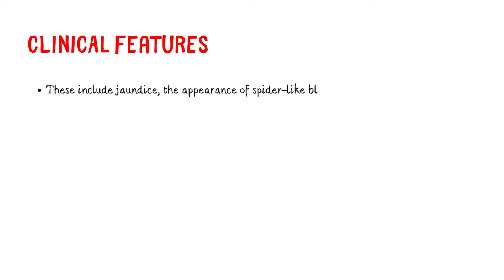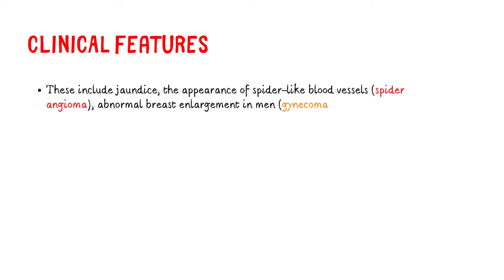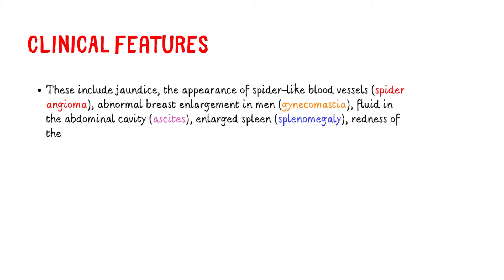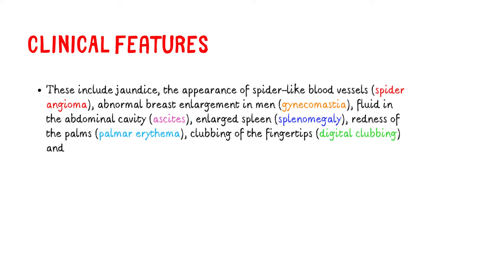Healthcare professionals may observe additional physical signs of cirrhosis during a physical examination. These include jaundice, the appearance of spider-like blood vessels (spider angioma), abnormal breast enlargement in men (gynecomastia), fluid in the abdominal cavity (ascites), enlarged spleen (splenomegaly), redness of the palms (palmar erythema), clubbing of the fingertips (digital clubbing), and involuntary clapping movements (asterixis).